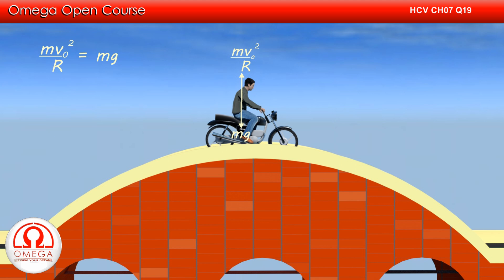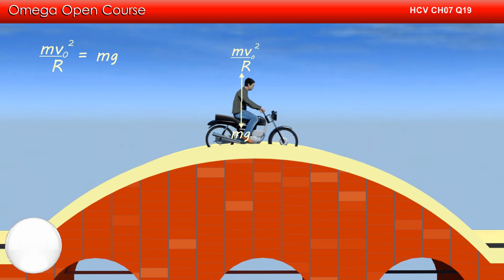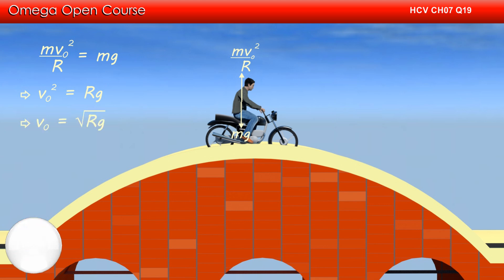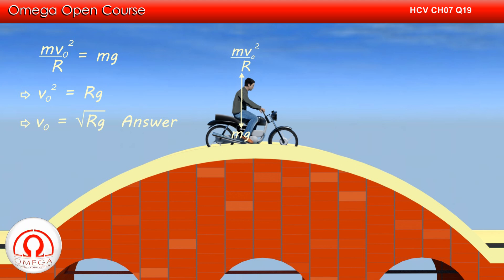This implies that at speed V0, the gravitational force just balances the centrifugal force, or MV0 squared by R is equal to mg. Simplifying, we get V0 squared is equal to Rg, or V0 is equal to root under Rg. This is the answer to part A of the question.